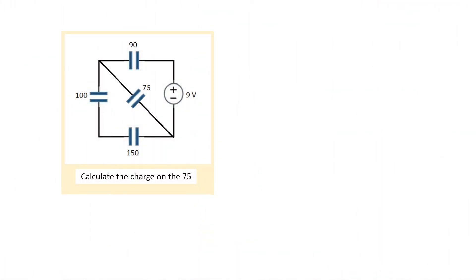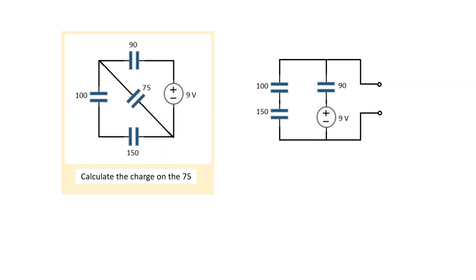Here's a capacitor example. Again, the question determines the output: calculate the charge on the 75 — assuming all capacitances in microfarads, that makes the 75 microfarads the output. We do a redrawing of the network where we will connect the 75 microfarads at the output points later. Leaving the output open, you can verify that the rest of the connections are correct.